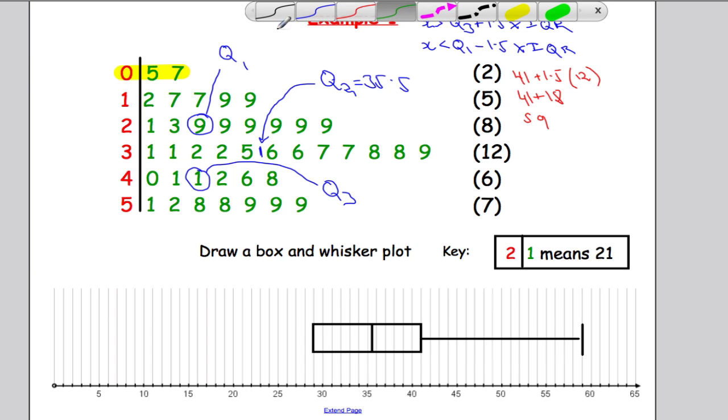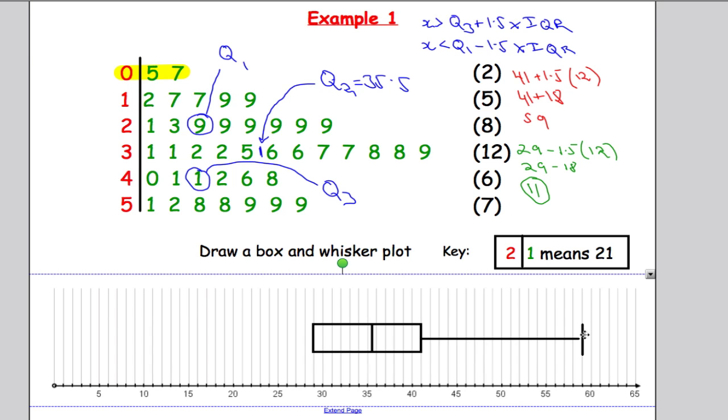Now we need to check the lower quartile. So I need to do Q1, 29, minus 1.5 times the interquartile range, which is 12. So 29, take away 18, is 11. So anything less than 11. But that's the boundary. That's the boundary now. And everything after that is an outlier. So let me mark that boundary. So let me find 11. Let's duplicate this so that it's the same size. Right, so we want to go to 11. So I'm going to mark the boundary. And everything after that is an outlier.